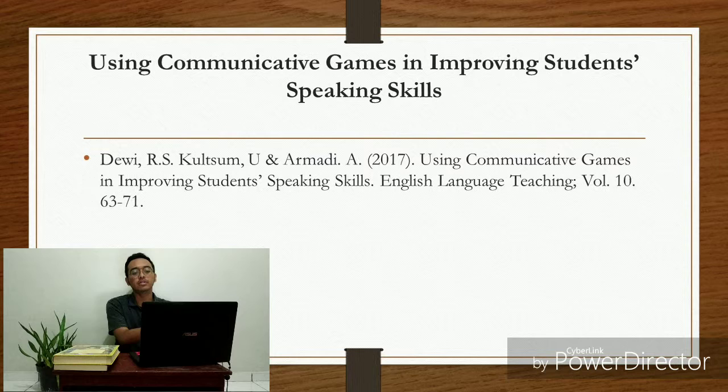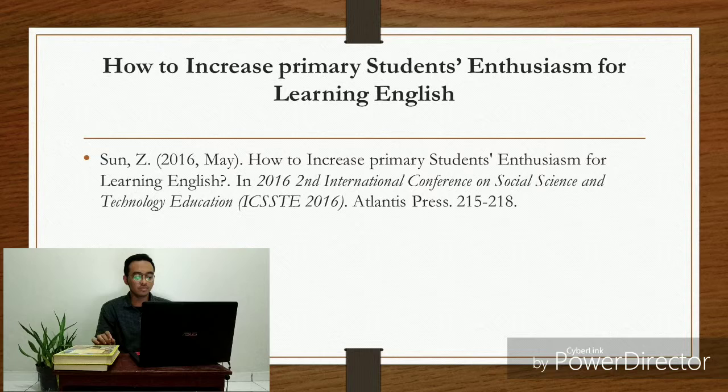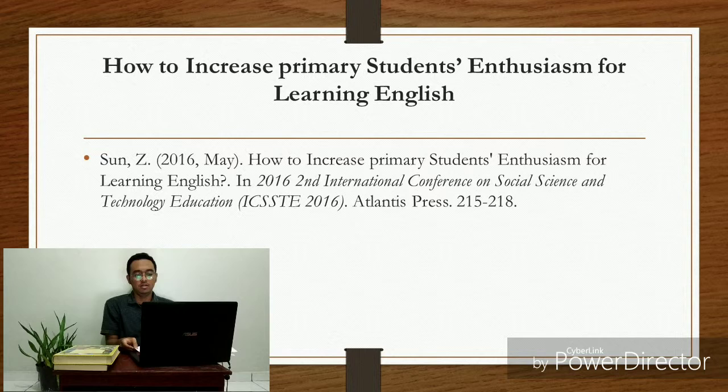Let's move to the second article. The second article is how to increase primary student enthusiasm for learning English. The aim of the study is to build up student enthusiasm. The participant of the study were some primary school students in China. The research used a kind of survey of methods. The findings said that 90 percent of students get their enthusiasm in learning English.